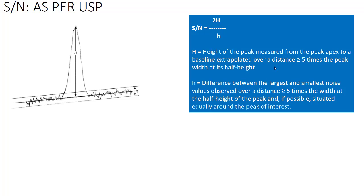We will try to understand the calculation of signal-to-noise ratio with the help of a practical example. Let us hold for some time. And the meaning of small h is what? The small h is the difference between the largest and smallest noise values observed over a distance greater than or equal to 5 times the width at the half height of the peak and, if possible, situated equally around the peak of interest.